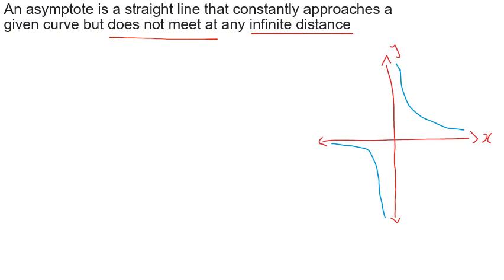The asymptotes are the two lines associated with the graph which describe its shape, and there are two types: vertical asymptotes and horizontal asymptotes.